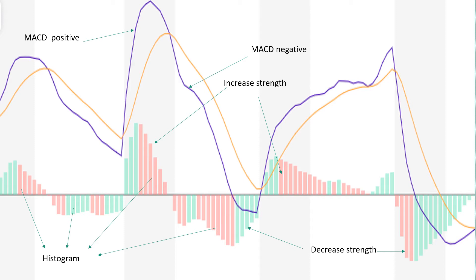In both upward and downward markets, a rise in the length of the histogram bars means an increase in trend strength, and a decrease in bar length means a decrease in trend strength. If the MACD line is above the signal line, it means the momentum is positive. If the MACD line is below the signal line, it means the momentum is negative.